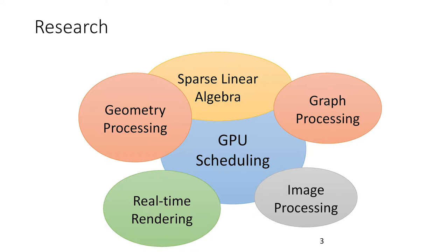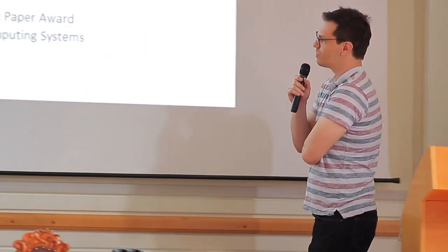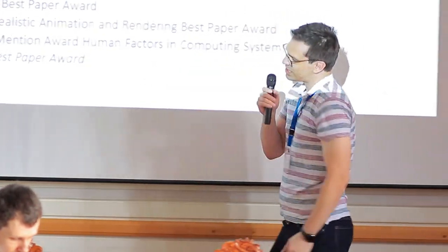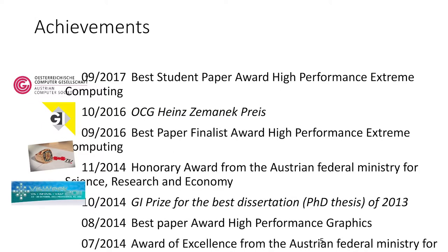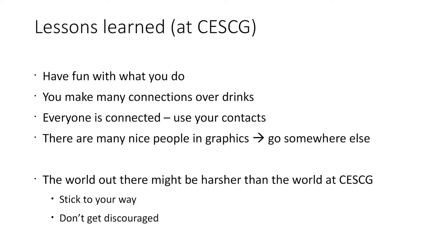Just quickly about me: I did a lot of stuff in Graz. Then after my PhD I went to Nvidia, also continuing to work on the GPU as you can imagine. Then I came back to Graz briefly and went to MPI — the Max Planck Institute — working with Hans-Peter Seidel, which was really cool. And now I'm back in Graz again. What else started with Czech is a list of awards — at Czech I was only the third best person, but a couple of other awards followed on top of that. One of the most important points is that you should have fun with what you do, and this is something you can see at Czech a lot.